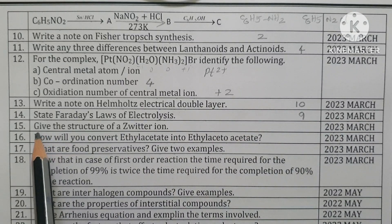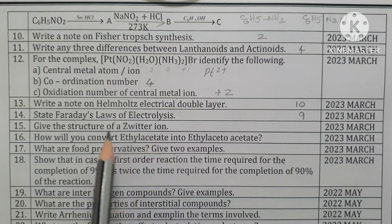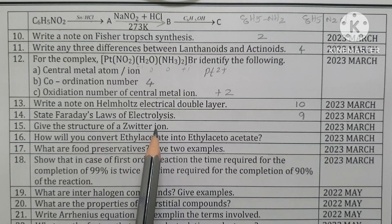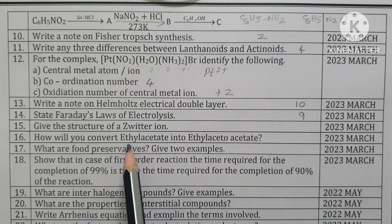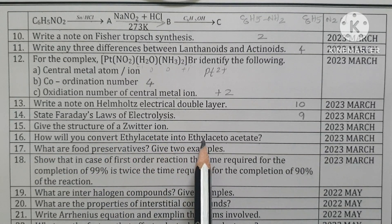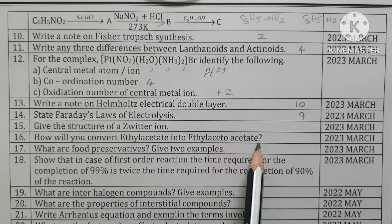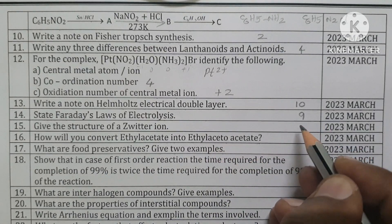Give the structure of the zwitter ion — alanine. How will you convert ethyl acetate into ethyl acetoacetate? Via transesterification reaction.